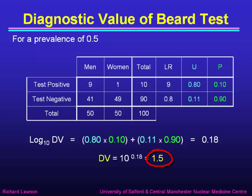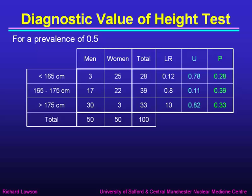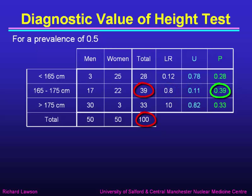The other test to compare with is the height test, which has three possible outcomes. A result of less than 165 centimetres has a likelihood ratio of 0.12, a usefulness of 0.78, and a probability of 28 over 100, which is 0.28. The middle result of 165 to 175 centimetres has a likelihood ratio of 0.8, a usefulness of 0.11, and a probability of 39 over 100, which is 0.39. The result of more than 175 centimetres has a likelihood ratio of 10, so the usefulness is 9 over 11, which is 0.82, and its probability is 33 over 100, which is 0.33.